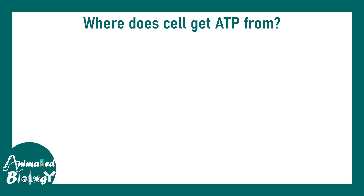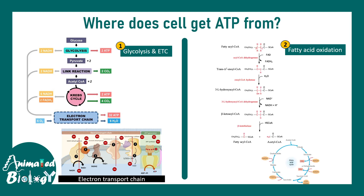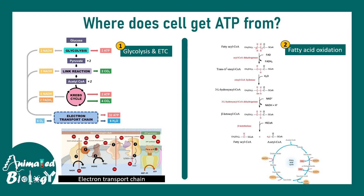When ATP falls down, these processes would be abrogated. ATP can be generated by glycolysis and oxidative phosphorylation. Oxidative phosphorylation generates the majority of ATP, while glycolysis makes a smaller amount. In extreme cases of starvation, fatty acid oxidation can also generate ATP.